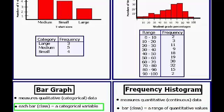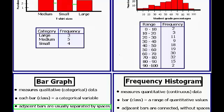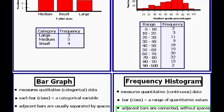The bars that you see in a bar graph actually represent categorical variables, whereas in a frequency histogram, the bars, which we also refer to as class, are a range of quantitative values. Generally, but not always, you'll find that adjacent bars are separated by spaces in the case of bar graphs, while in the case of frequency histograms, adjacent bars are connected without spaces, which reflects the quantitative or continuous nature of the data.